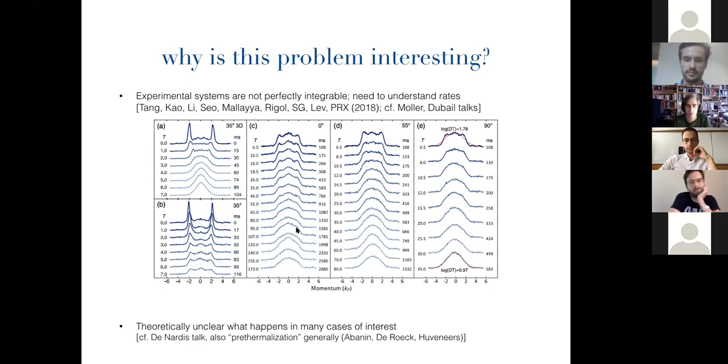At the same time, from a more conceptual perspective, there's been a realization that relaxation of a slightly broken conservation law can be very interesting and very non-trivial. A lot of that is stimulated by papers by Abanin, Durek, and Hvědíl, and others, who show that contrary to some naive expectation you might have, you might have, for instance, exponentially long lifetimes for approximate conservative quantities.